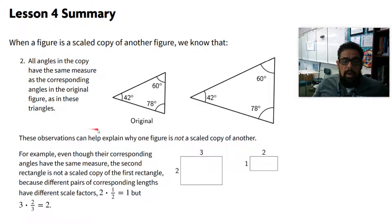And these observations can help explain why one figure is not a scaled copy of another. For example, even though their corresponding angles have the same measure, here we have these two figures. The second rectangle is not a scaled copy of the first rectangle because different pairs of corresponding lengths have different scale factors. If I look here at this side, this is two. Right here, the corresponding side is one.